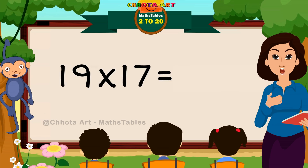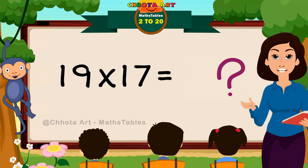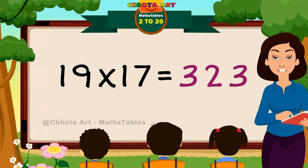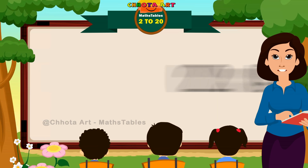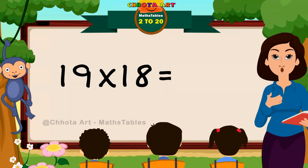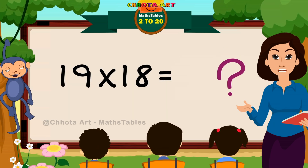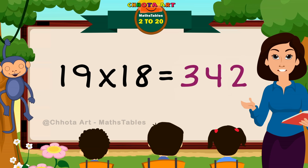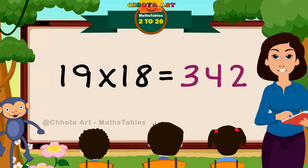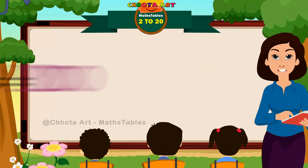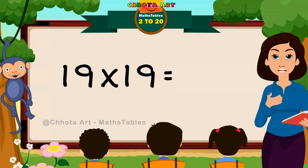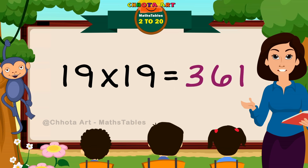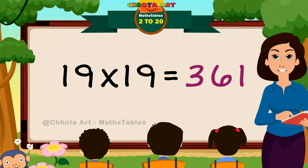19 times 17 is 323. 19 times 18 is 342. 19 times 19 is 361.